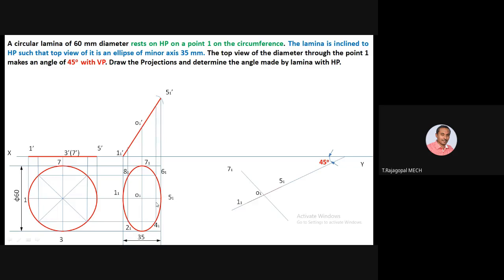Mark four-one and six-one by measuring the distance from O1 to the line and marking that point. Extend the four-one six-one line. Similarly, convert two-one and eight-one to the 45-degree line. Now all eight points are fixed. With these eight points, join them all to complete an ellipse. After completing the ellipse, extend the projectors from the top view as well as from the front view for the final step.